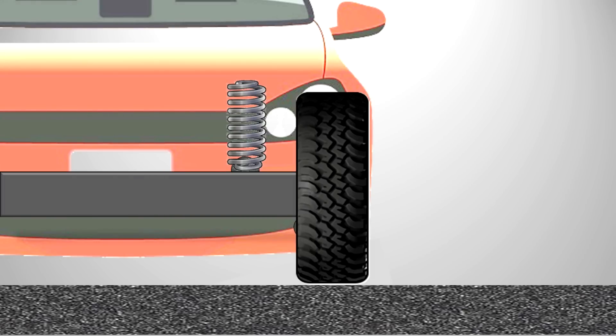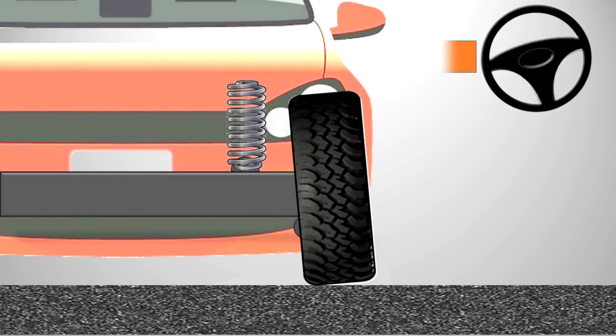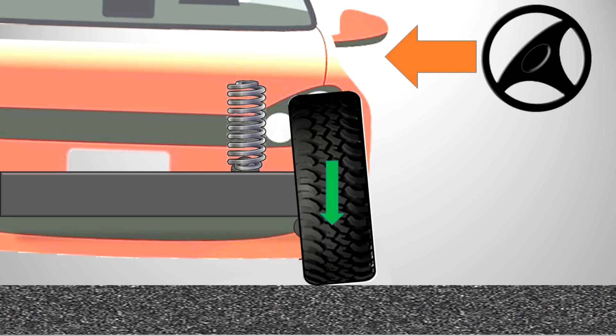Introducing a small amount of negative camber counteracts this effect on cornering, increasing the tyre's contact with the road and improving directional stability and handling.